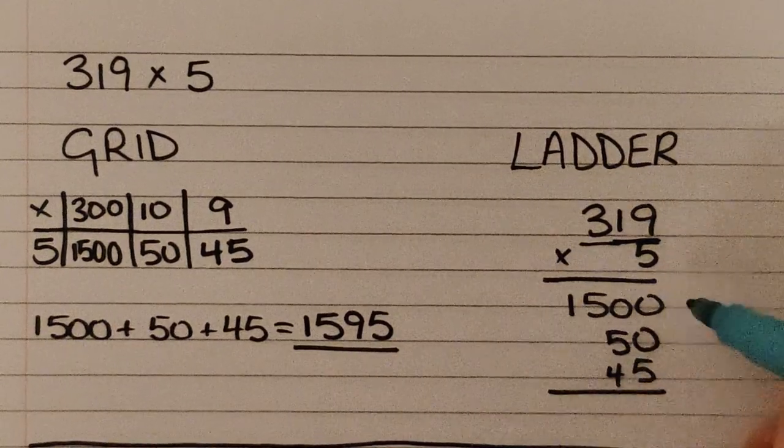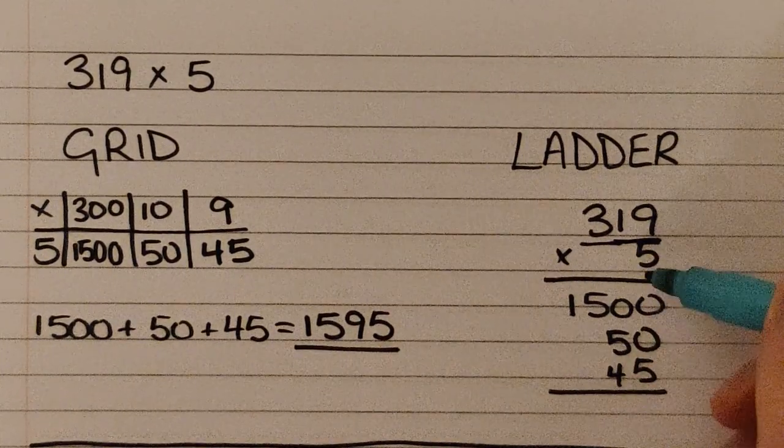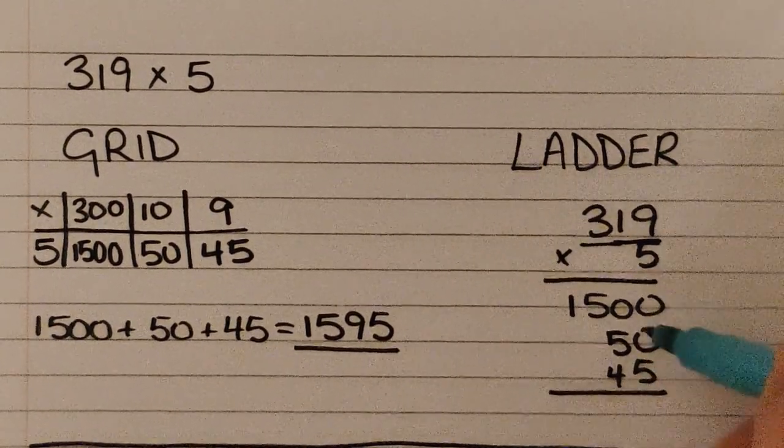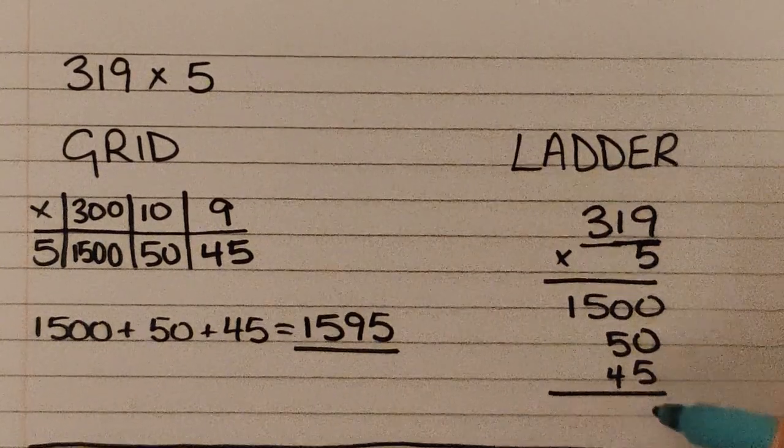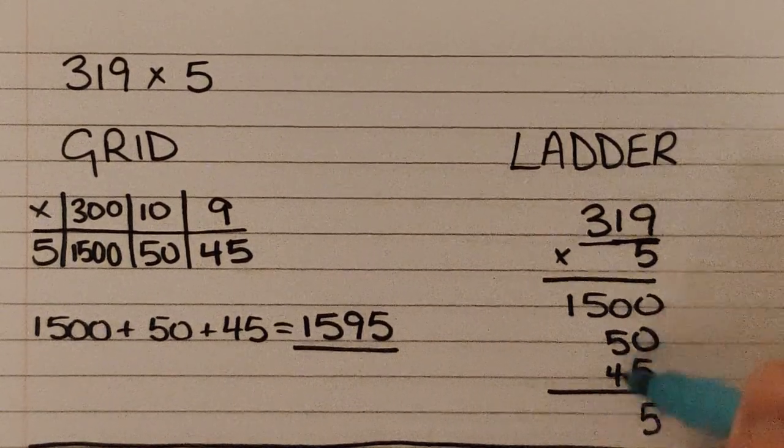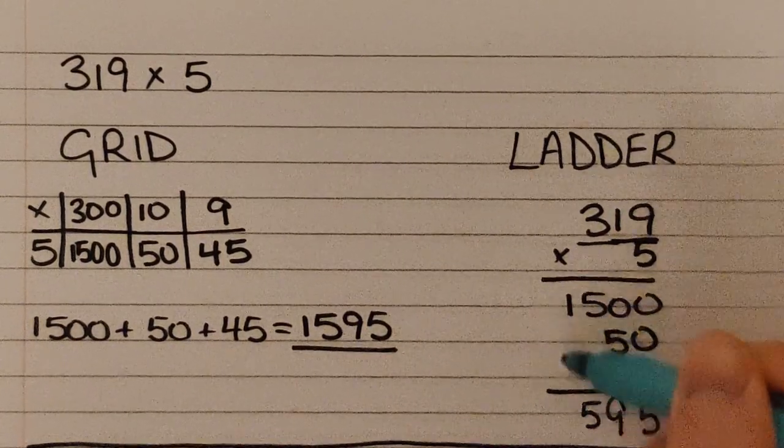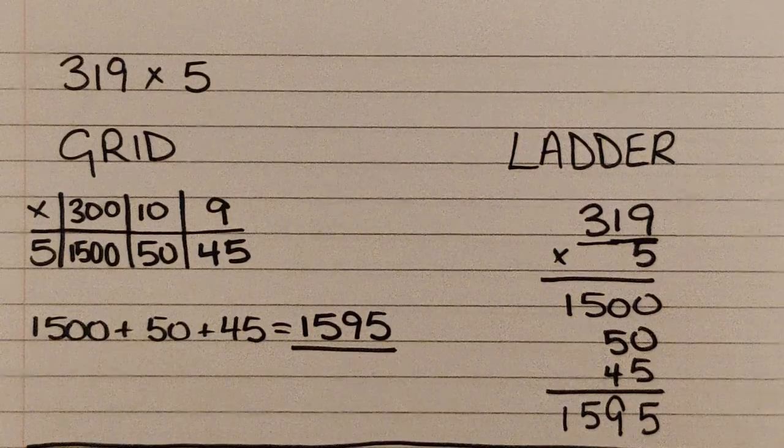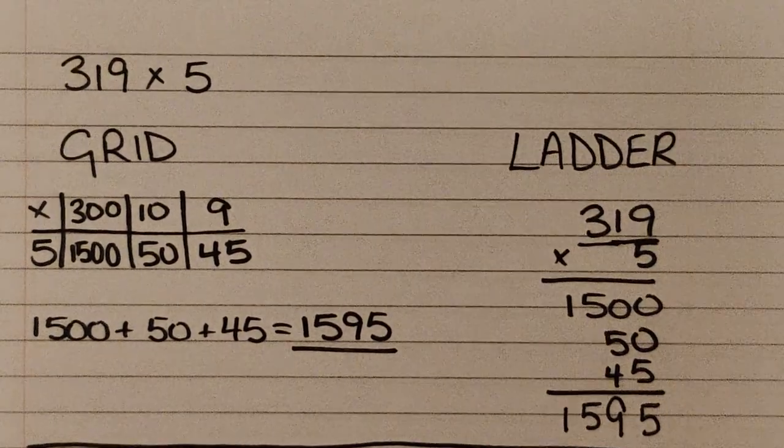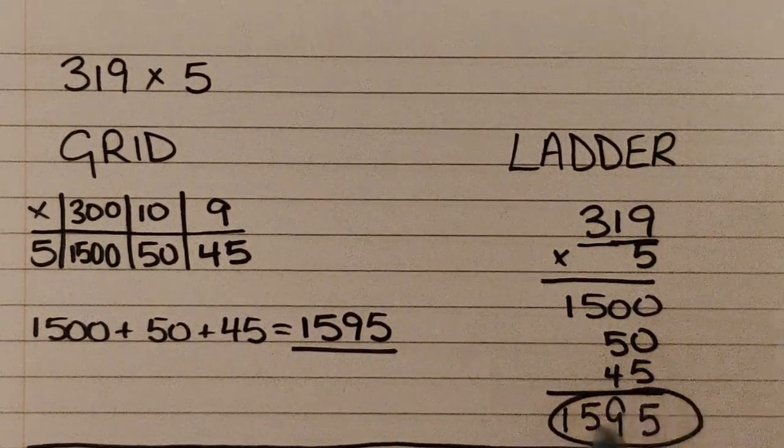Now if I put these all in the right columns we should be able to add them up. If we add the ones column up we get 5. If we add the tens column up we get 9. There's only a 5 in the hundreds column and there's only a 1 in the thousands column. If you look, you should be able to see we've got the same answer.